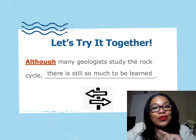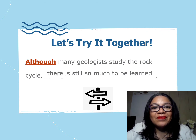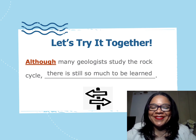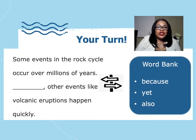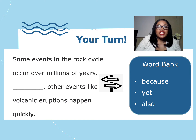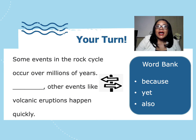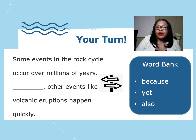Did your sentence show two different ideas? Great job. Now it's your turn to practice using change of direction transition words. Choose the transition word that would show a change of direction between these two ideas: Some events in the rock cycle occur over millions of years. Other events, like volcanic eruptions, happen quickly. Which of the transition words in the word bank could you use to show that these are differing ideas?